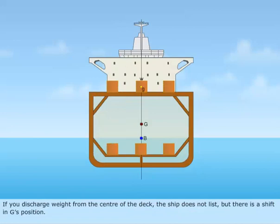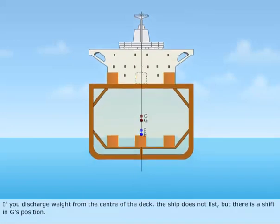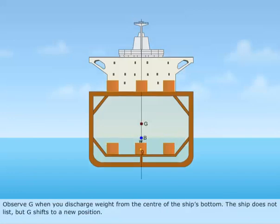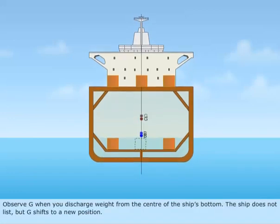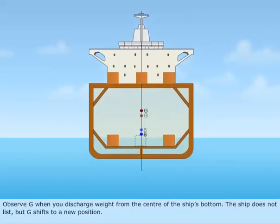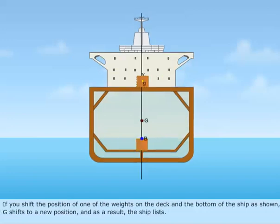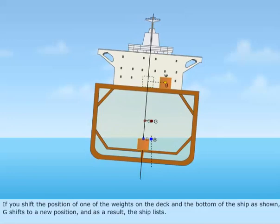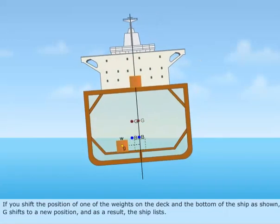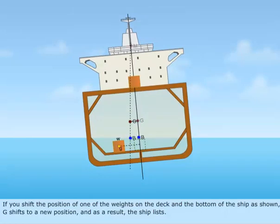If you discharge weight from the center of the deck, the ship does not list but there is a shift in G's position. Observe G when you discharge weight from the center of the ship's bottom — the ship does not list but G shifts to a new position. If you shift the position of one of the weights on the deck and the bottom of the ship, G shifts to a new position and as a result the ship lists.